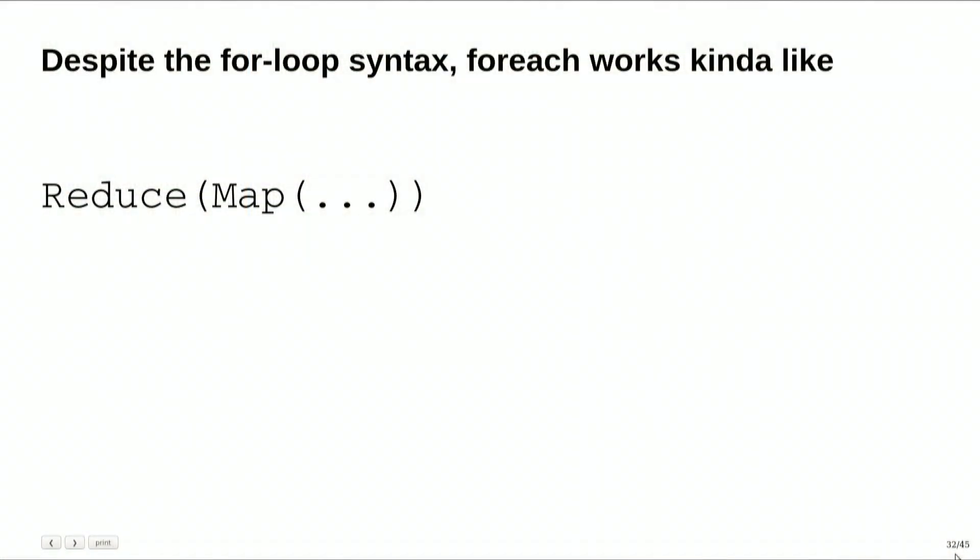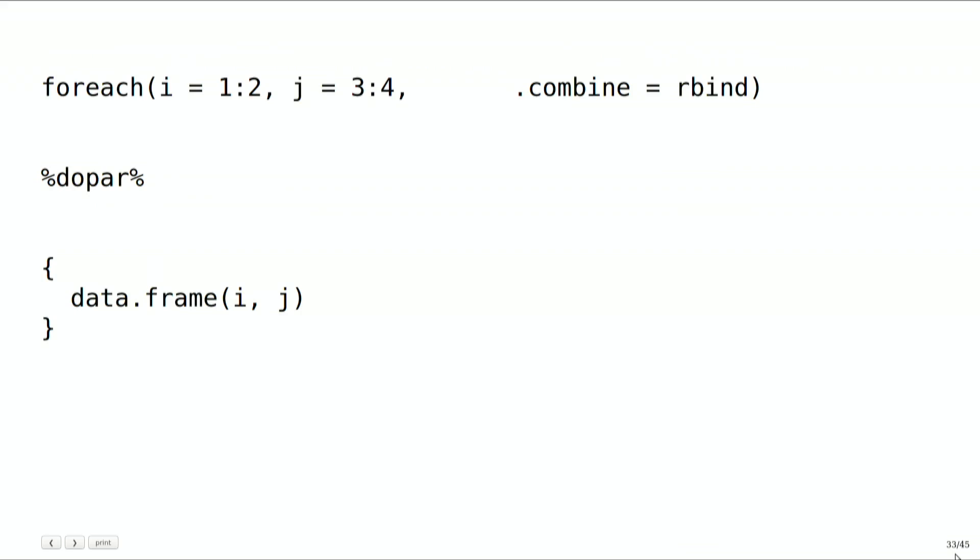Back in 2008, Steve made the decision to syntactically structure foreach in the form of a for loop, because he was really enamored of list comprehensions, set comprehensions, and all these Haskell-y things. Despite its for loop syntax, foreach really kind of works like a reduce of a map.